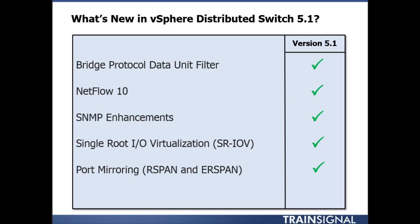There's a new bridge protocol data unit filter to block BPDUs coming from the physical network, a new version of NetFlow, SNMP enhancements, and single-root I/O virtualization (SR-IOV). SR-IOV was something Windows Server 2012 Hyper-V first introduced and people were criticizing VMware for lacking — now vSphere has it too. SR-IOV is for extremely demanding network applications that need the highest available network performance, allowing a virtual machine to connect directly to a physical NIC without going through the virtualization layer.